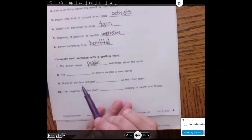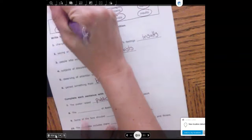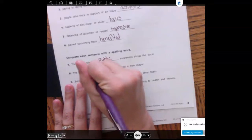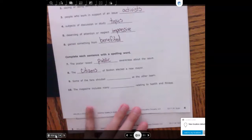The blank of Boston elected a new mayor. So that would be the citizens. The citizens are groups of people that are able to vote. The citizens of Boston elected a new mayor.